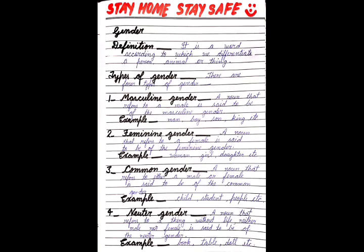Now let's move on to the types of gender. There are four types of gender. First is masculine gender. A noun that refers to a male is said to be of the masculine gender. This gender tells us about the male. Examples: man, boy, son, king, etc.